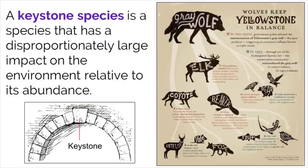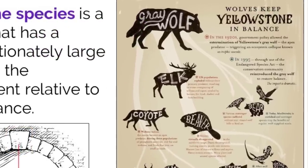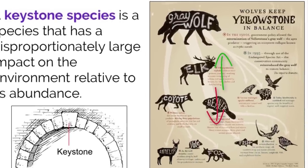An example of a keystone species would be the wolves in Yellowstone Park. The wolves are not the largest population in Yellowstone, but they are one of the most important. Take the wolves out of the equation and the elk populations increase to such large numbers that they overgraze important plants that other species rely on. This means that beavers could disappear because they no longer would have resources to build shelter and dams. We need keystone species within ecosystems to promote a healthy balance of biodiversity.